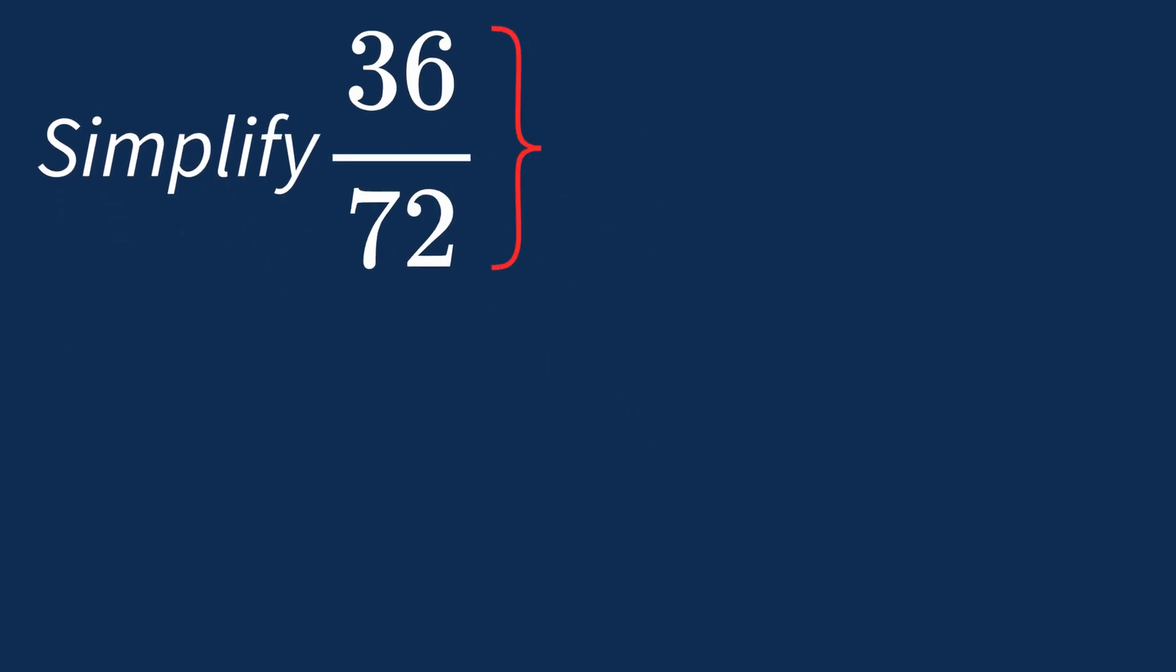To simplify 36 over 72, we need to look for the common factors between the top number, the numerator, and the bottom number, the denominator.